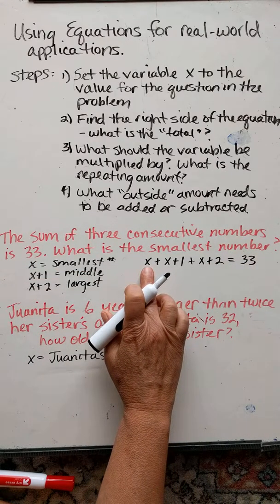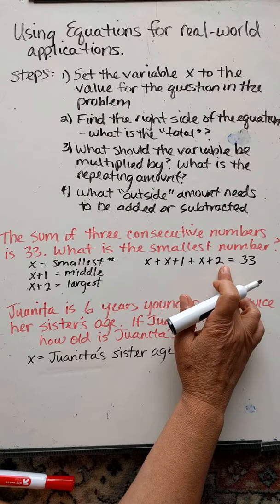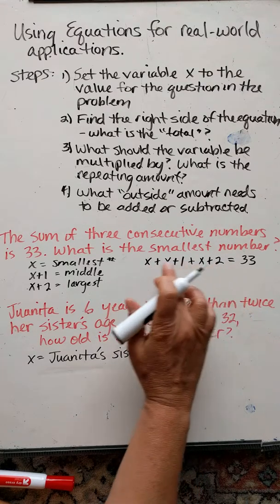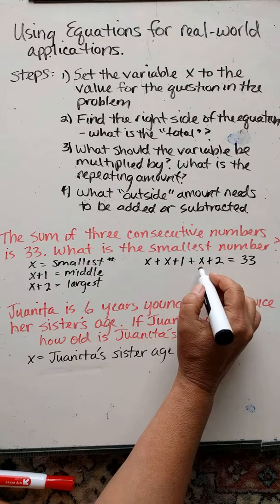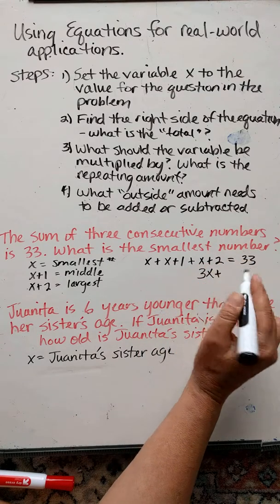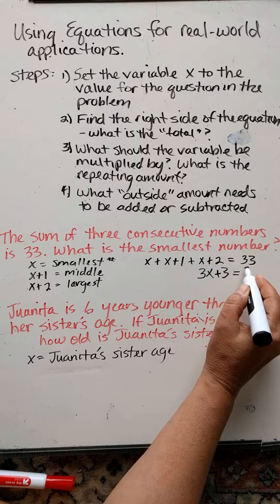So here are my three numbers, smallest, middle, and largest. So combining like terms, I have x, x, and x. 3x plus 3 equals 33.